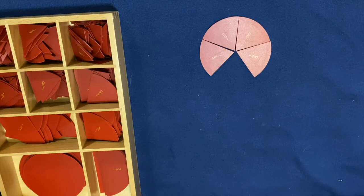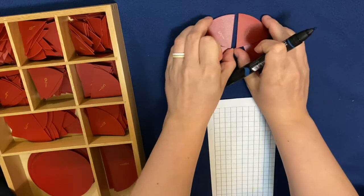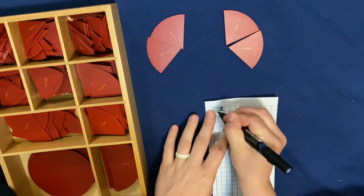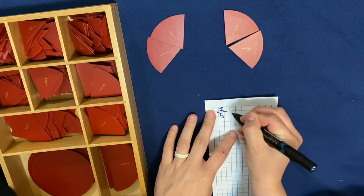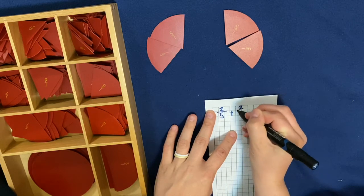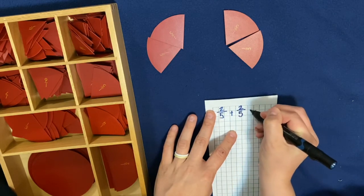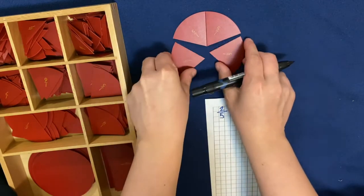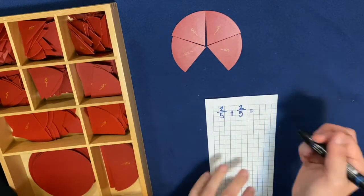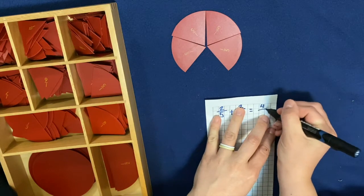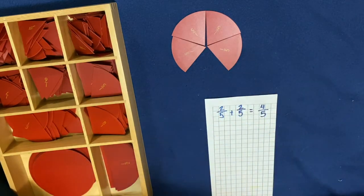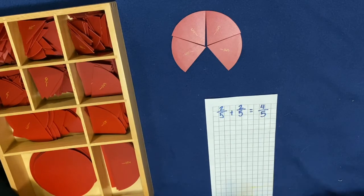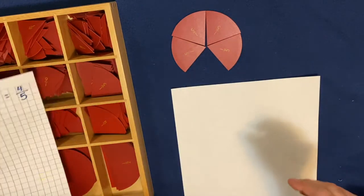So let me show you how we can write this down. Two-fifths plus two-fifths equals. And when we put it together, how much did it equal? It equaled four-fifths. We can also do some tracing of this. Let me show you how we can do that.